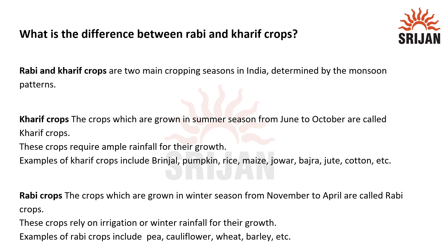The question is: what is the difference between Rabi and Kharif crops? Rabi and Kharif crops are two main cropping seasons in India, determined by monsoon patterns.